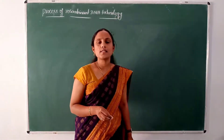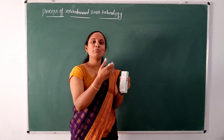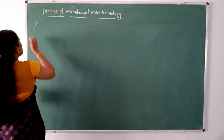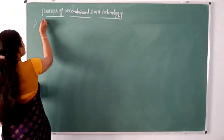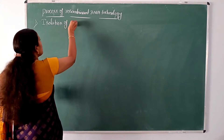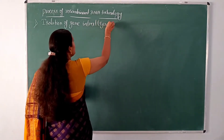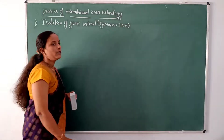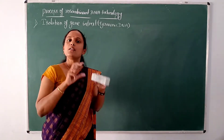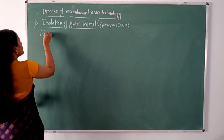Till now, we have discussed in detail the tools of recombinant DNA technology. So now, let us discuss step by step how the process will be conducted. The first step in recombinant DNA technology is the isolation of the gene of interest, or we can call it genomic DNA. That gene should be isolated from a source organism.